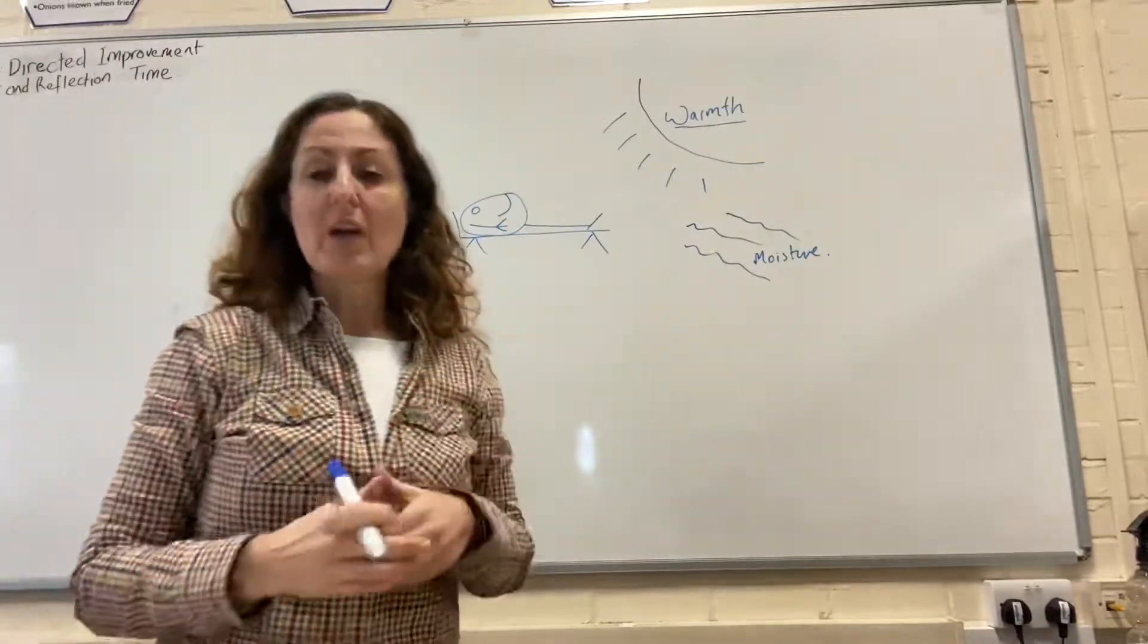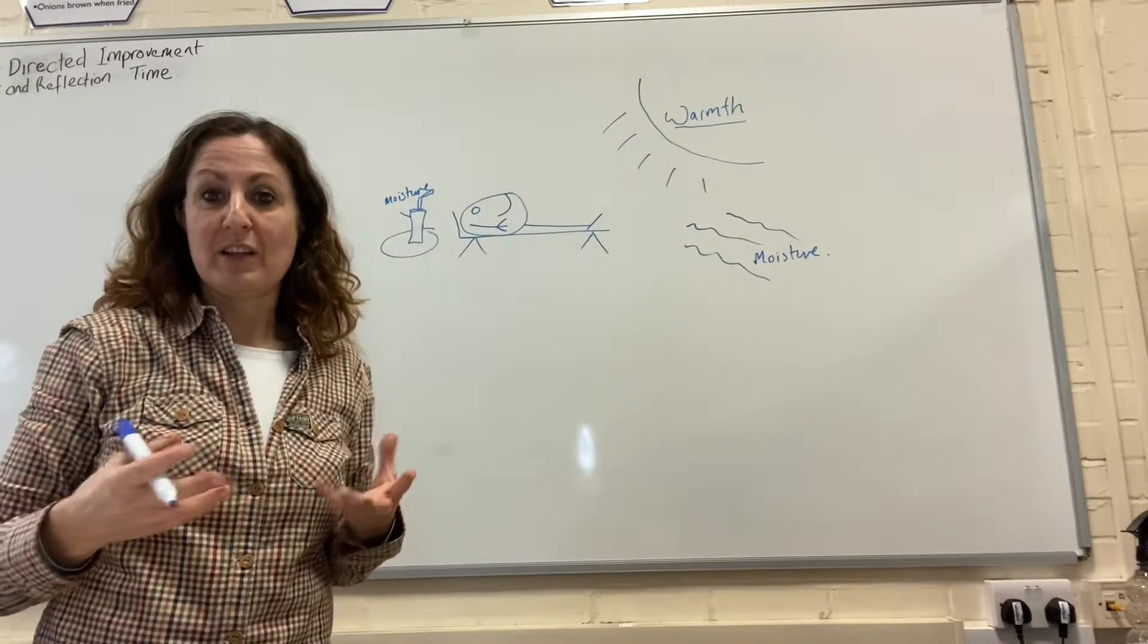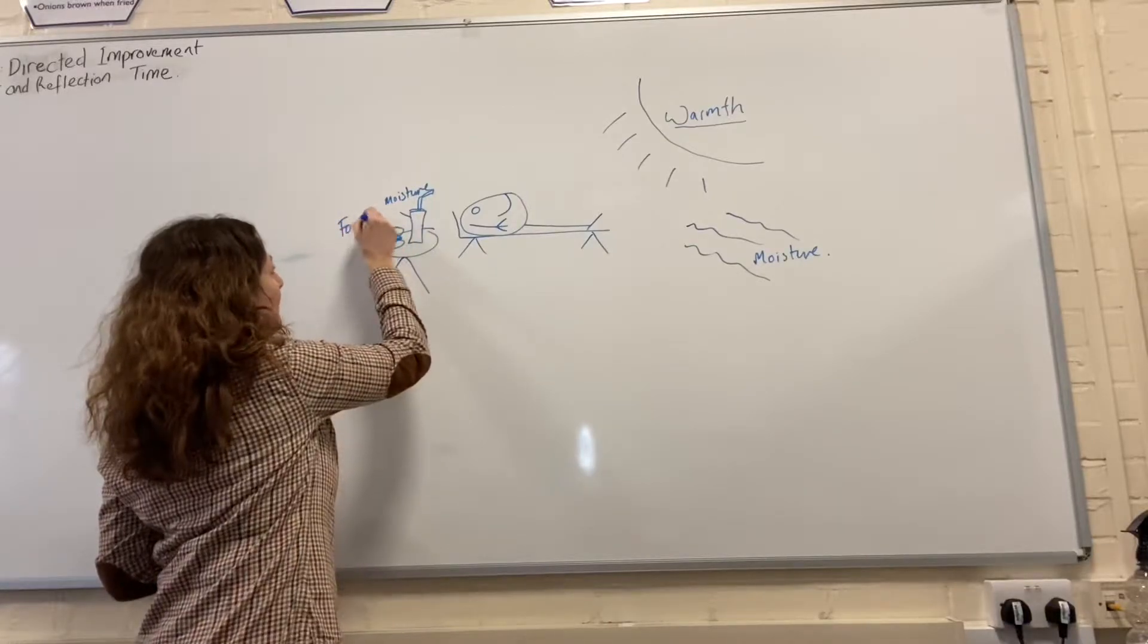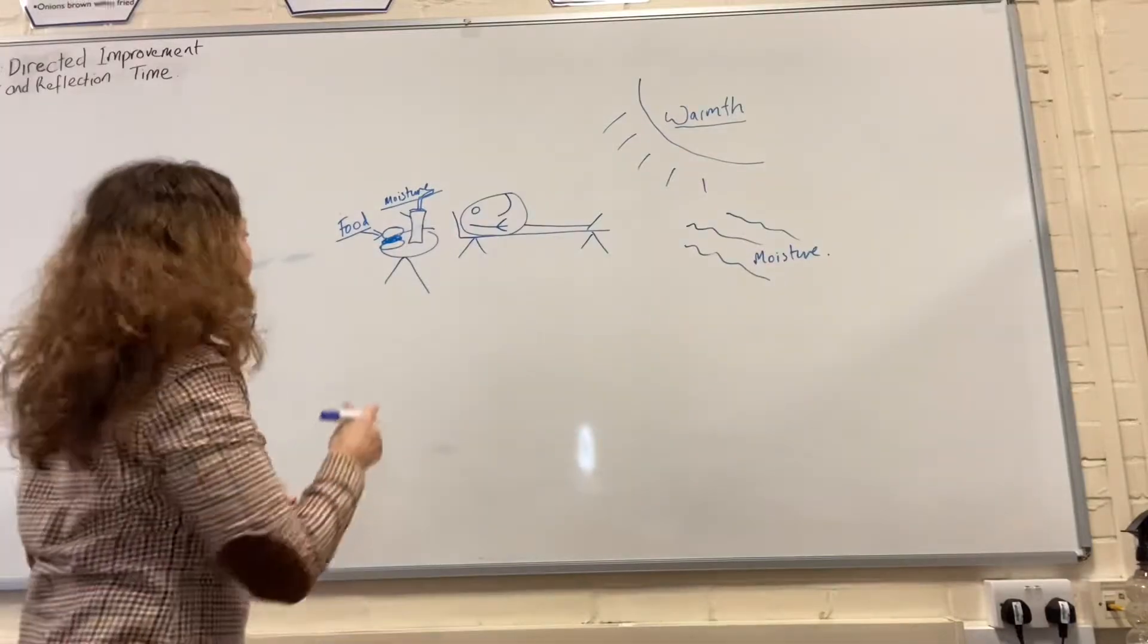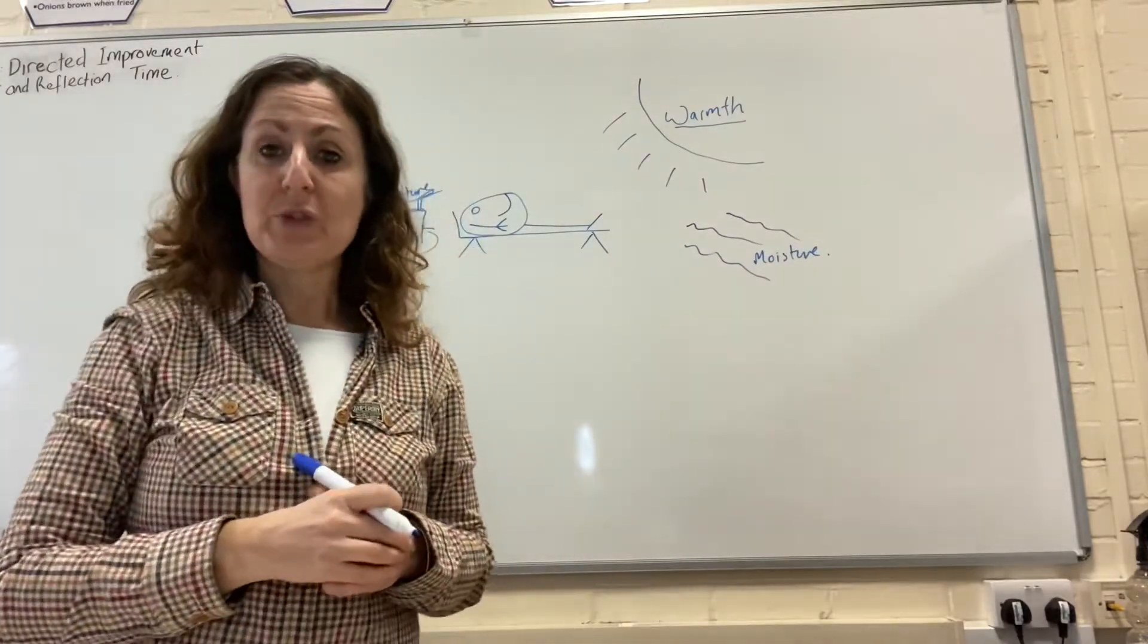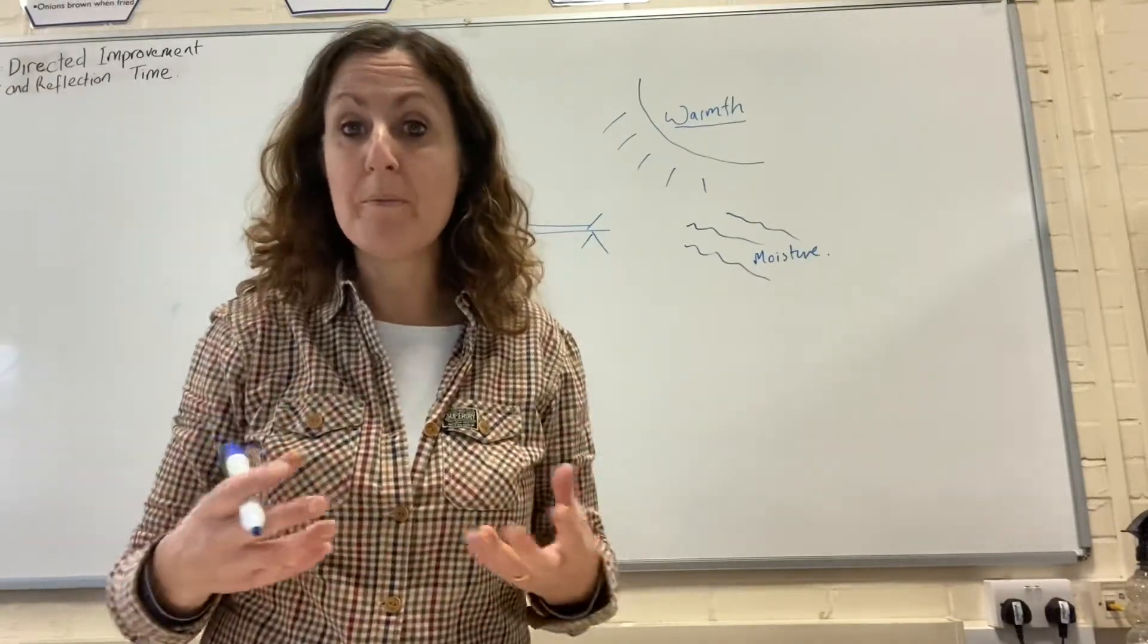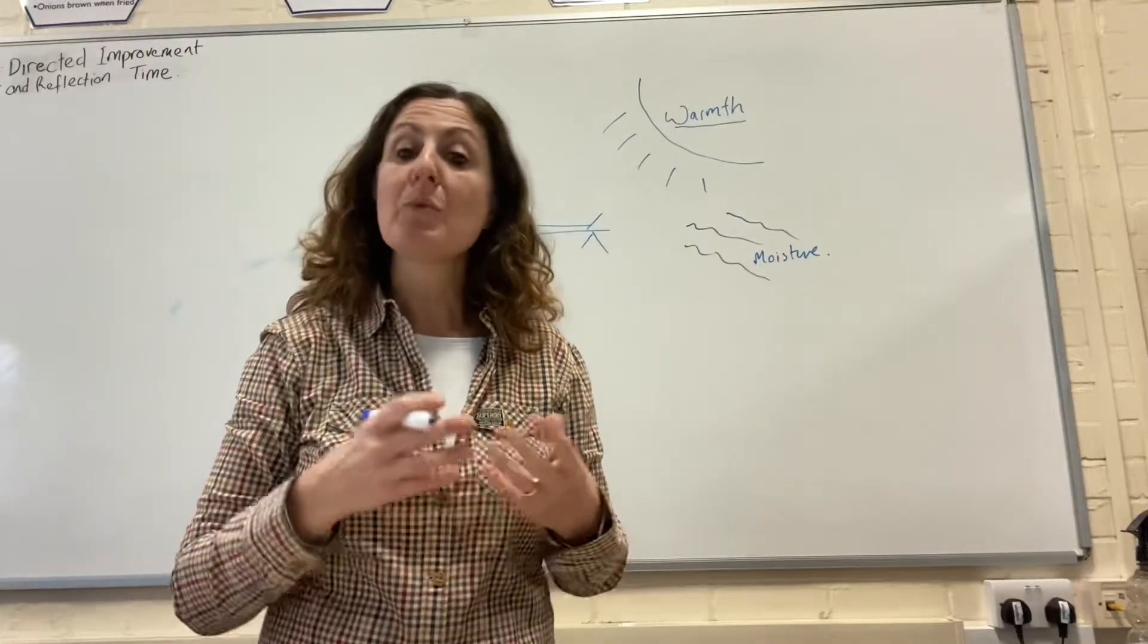The other thing bacteria need to grow is food. If you imagine yourself at the beach, you might get a hamburger. Bobby also likes food, and he particularly likes hamburgers because they have protein. Protein is a food that bacteria particularly like. We refer to protein foods like raw meat, raw chicken, soft cheeses, raw milk, and shellfish as really high-risk foods because they're what bacteria really enjoys. When dealing with those types of foods, we need to be really careful.